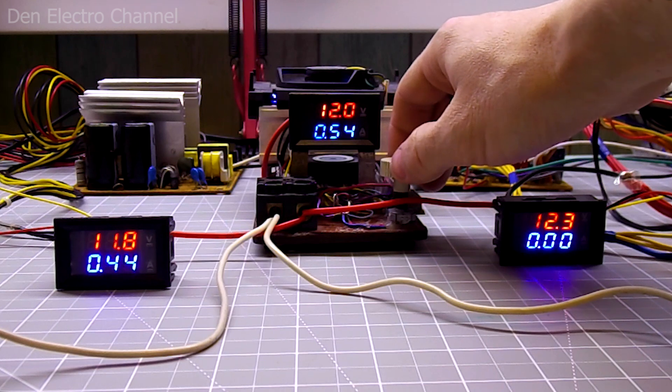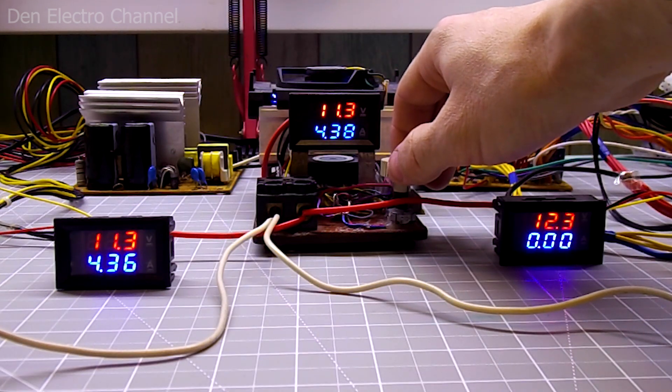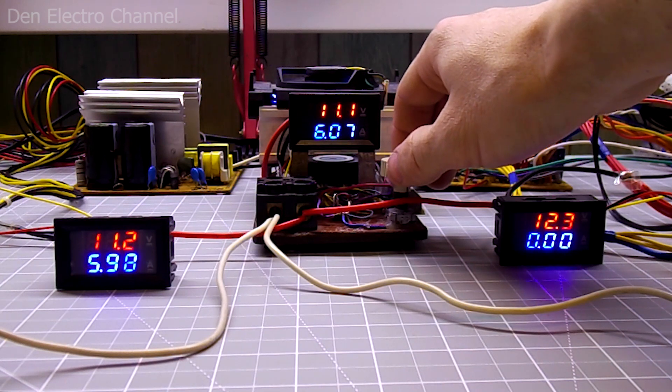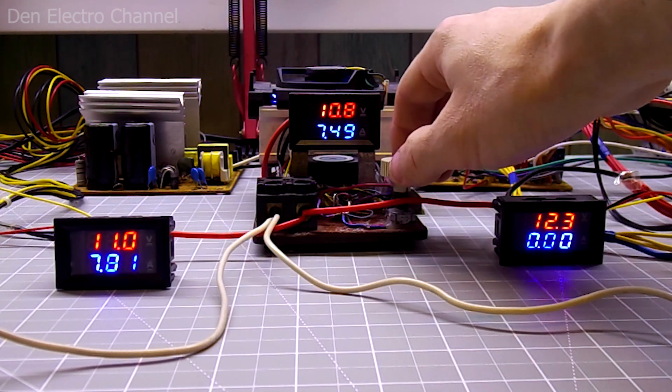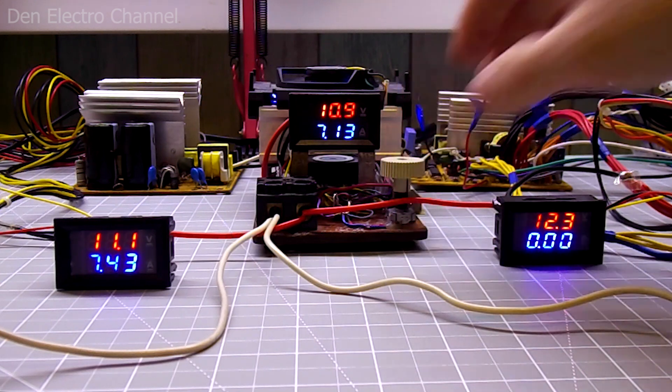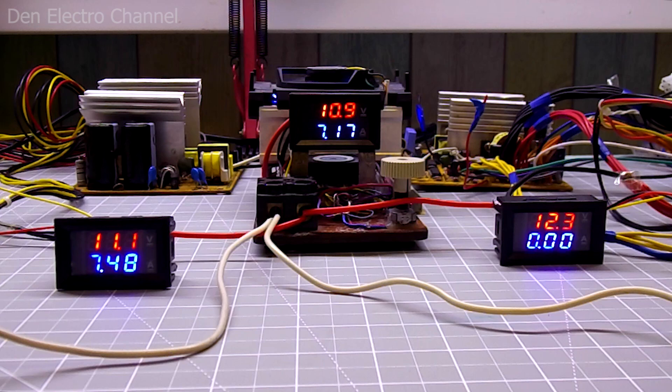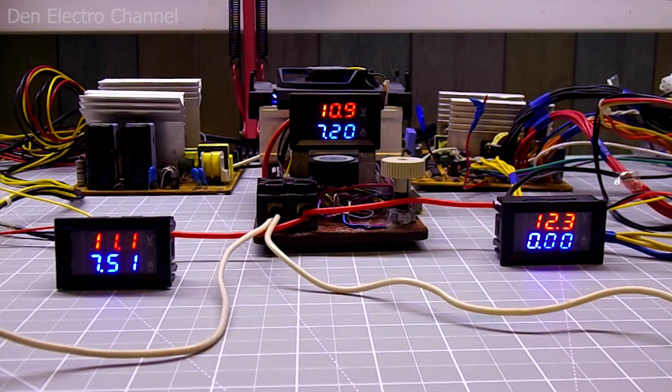I increase the power of the electronic load. The voltage begins to sag. I set the current to 7 amps.